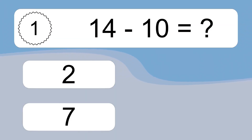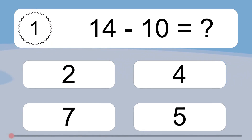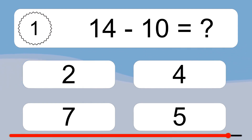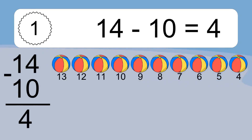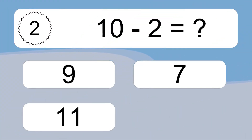14 minus 10 equals what? 14 minus 10 equals 4. Let's count it: 13, 12, 11, 10, 9, 8, 7, 6, 5, 4.